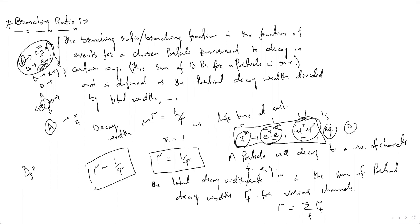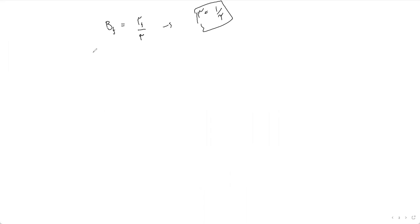So the branching ratio is obtained by the decay width to a particular channel divided by the total decay width. If the lifetime is given, you can calculate the decay width and then find out the branching ratio. Let me take some examples to elaborate further.